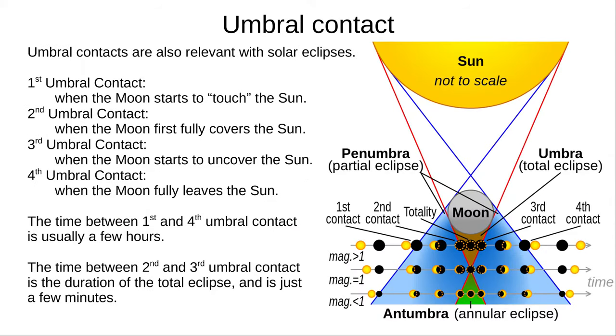We can apply the same principle to a solar eclipse. First umbral contact is when the Moon appears to touch the Sun. Second umbral contact is when the Moon fully covers the Sun.